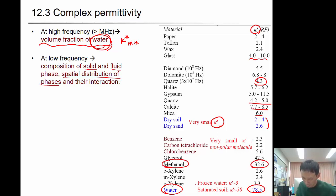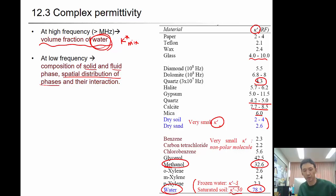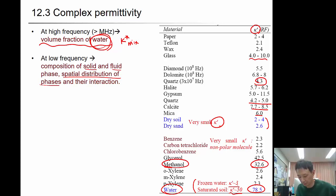If the soil contains water, saturated soil is around 50. And if it's frozen water, it's about 3 — meaning ice has very low permittivity.